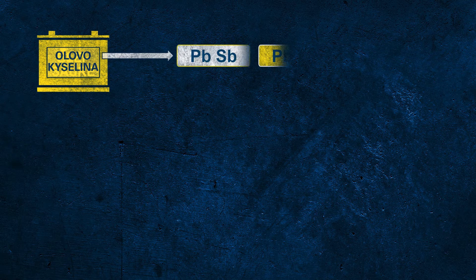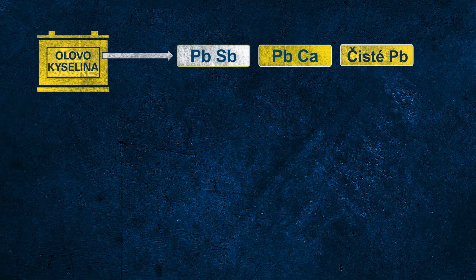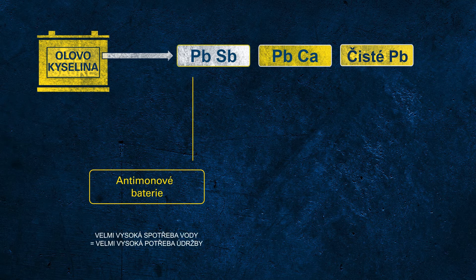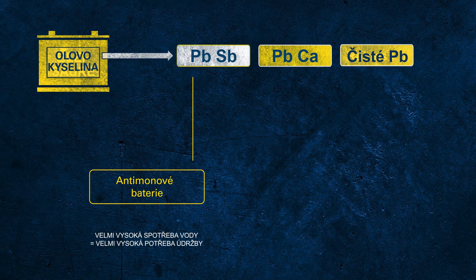When talking about lead, we're actually talking about the lead alloy used to produce the grids. There are different alloys potentially used for batteries. PBSB indicates so-called antimony SB batteries. Antimony batteries have a very high water consumption, which is why these batteries demand very high maintenance to regularly check the electrolyte level and refill with distilled water from time to time. This is why this battery technology is obsolete today.